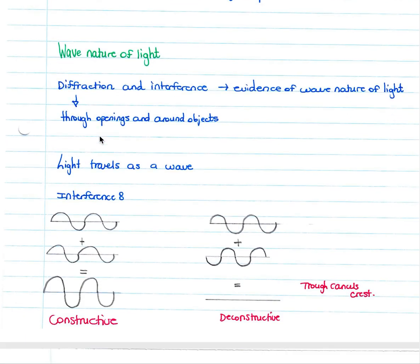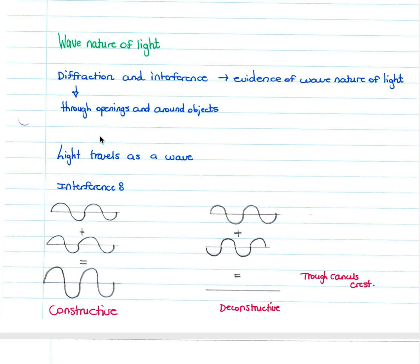The wave nature of light is evidenced by diffraction and interference — though this does not form part of the syllabus, it is useful to know. Light travels as a wave; constructive interference produces a wave double that of the first, while destructive interference occurs when two waves cancel through their crests and troughs, forming no resultant wave.